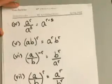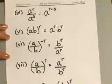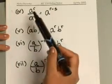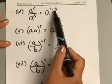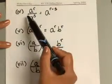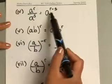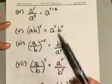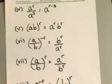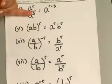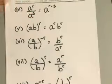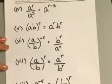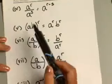Let's look at rule number 4. If you are dividing the same base with different exponents, you go ahead and subtract the exponents. So a to the r divided by a to the s gives you a to the r minus s. Your r and s could be any real number and these rules would still apply; here we're focusing specifically on rational exponents.